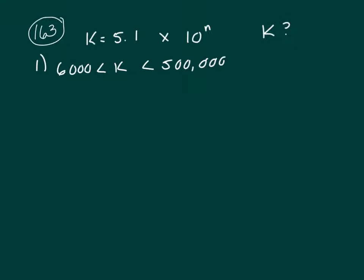We are trying to find the value of k, and k is 5.1 times 10 to the n. You know that multiplying by a factor of 10 moves the decimal to the right. It makes it larger. We know it makes it larger because they tell me that n is positive.